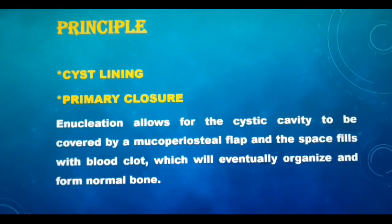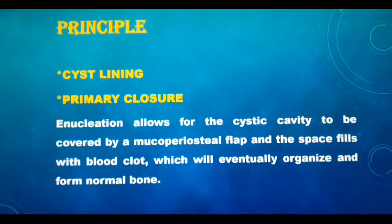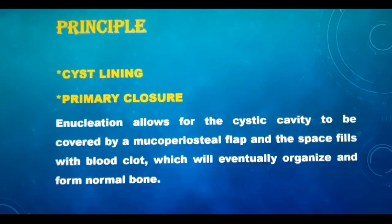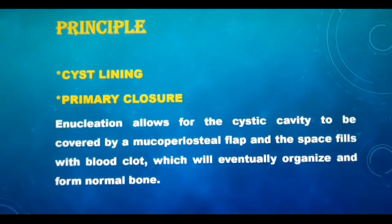What is the principle of enucleation? The two key words to remember here are cyst lining and primary closure. Cyst lining is completely removed in enucleation and the defect is sutured, which later heals by primary intention. That means the flap is sutured back to cover the cyst cavity. Enucleation allows for the cystic cavity to be covered by a mucoperiosteal flap and the space fills with blood clot, which will eventually organize and form normal bone.